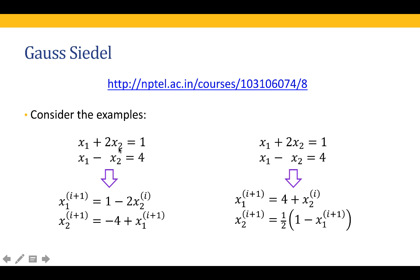The example we consider is: x1 plus 2 x2 equal to 1, and x1 minus x2 equal to 4. There are two ways to rearrange these. The first way gives x1 equal to 1 minus 2 x2, and x2 equal to minus 4 plus x1. The second way gives x1 equal to 4 plus x2, and x2 equal to (1 minus x1) divided by 2. We are going to look at Gauss-Seidel using both formulations.